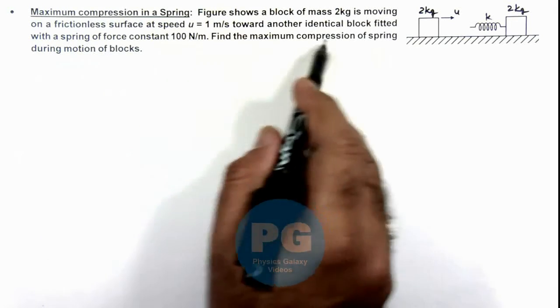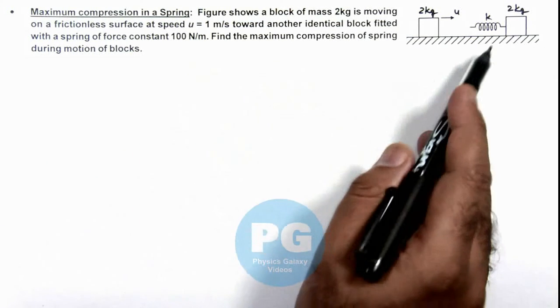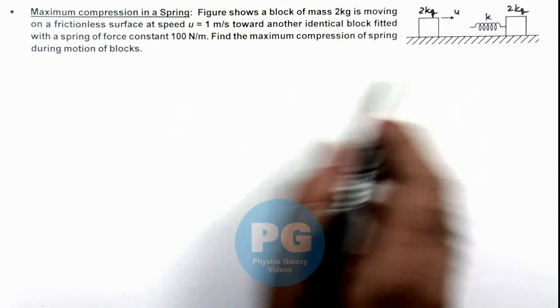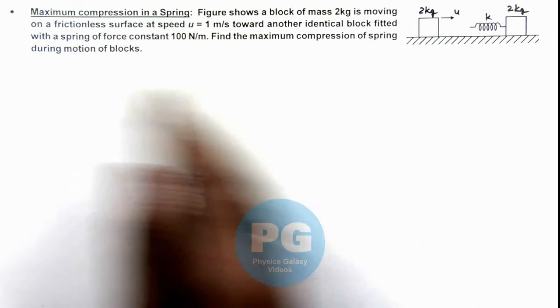toward another identical block fitted with a spring of force constant 100 newton per meter. We are required to find the maximum compression of spring during motion of blocks.